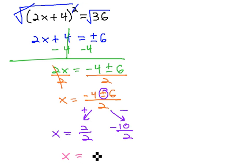And then we can simplify those fractions to x equals 1 or negative 5, giving us our two solutions for x.